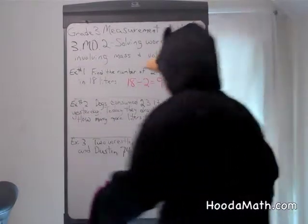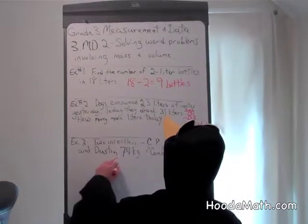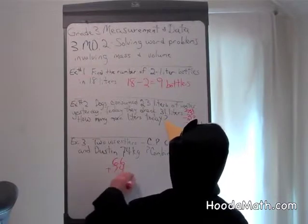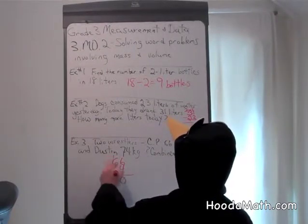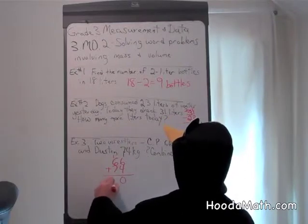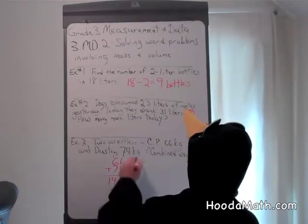Yes, we add 66 plus 74. 6 and 4, 10, regroup. 1 and 6 is 7, and 7 is 140 kilograms.